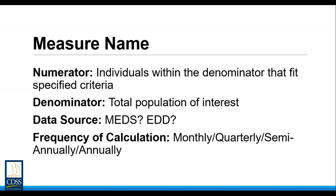The way the calculation works is from top to bottom: the numerator divided by the denominator gives you the measure calculation. For example, if we want to know what percentage of people in a group smoke and there are 100 people in the group and 10 people smoke, our numerator is 10, our denominator is 100, so our calculation is 10 divided by 100, or 10 percent.